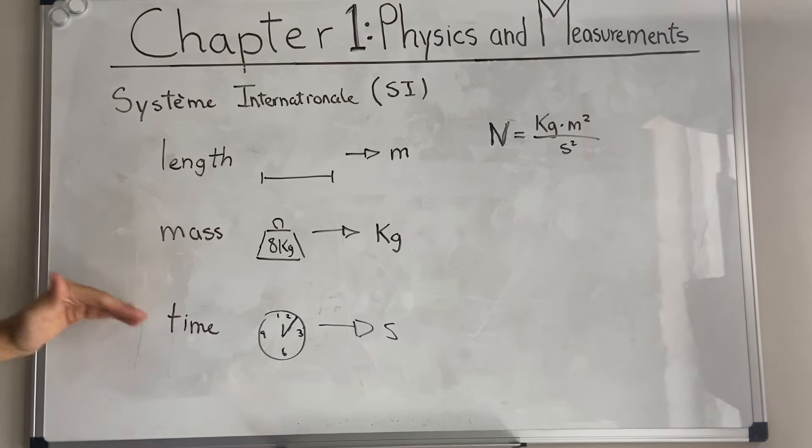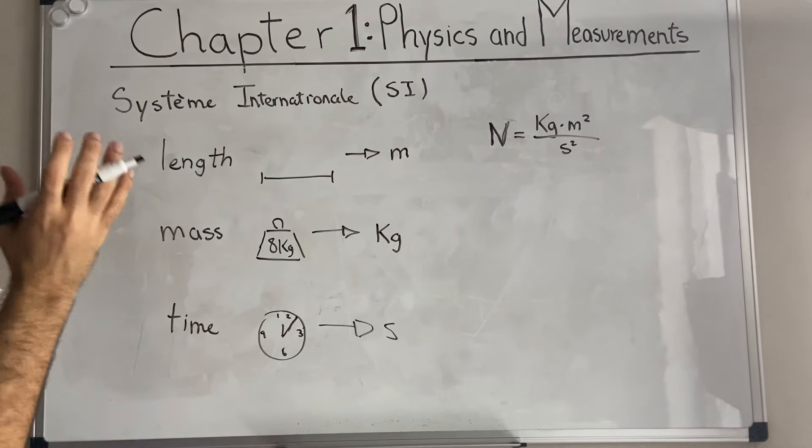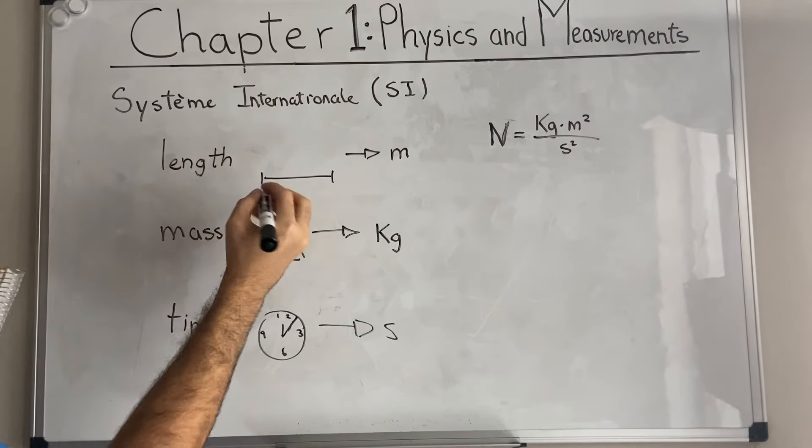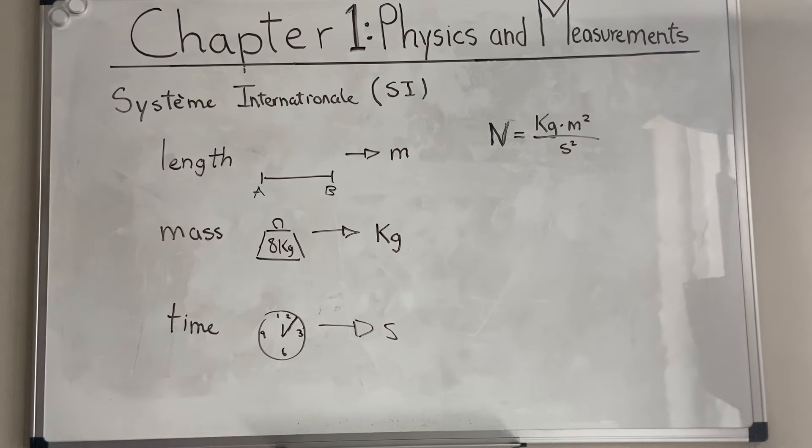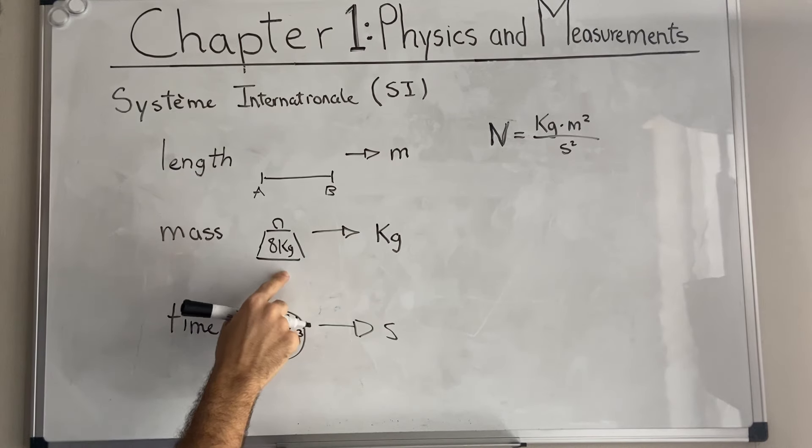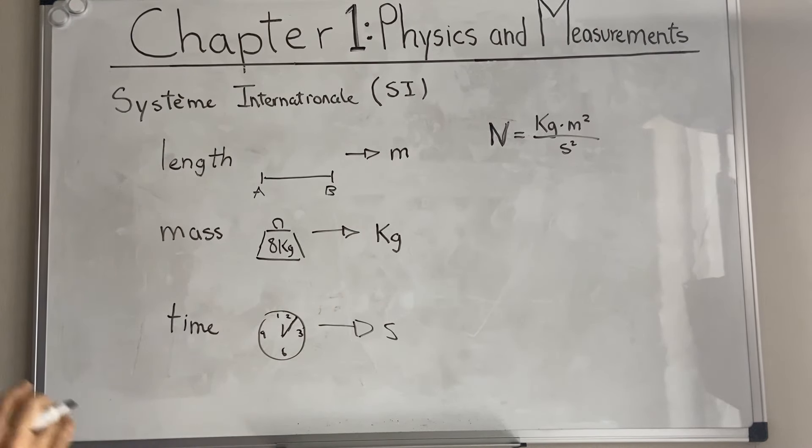If you want to define these three base units pretty simply, then we can say: length is the distance between two points in space, A and B. Mass is the measure of the amount of matter in an object. And time is a measurable period that defines the progression of events from past to present to future. I wanted to give a little bit of a definition, but I'm sure you guys already know what time is, of course.